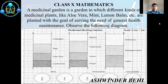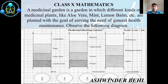Hello friends, today we'll discuss a new case study of Class 10 based on chapter coordinate geometry. A medicinal garden is a garden in which different kinds of medicinal plants like aloe vera, mint, lemon balm, etc. are planted with the goal of serving the need of general health maintenance. Observe the following diagram — on the basis of these conditions we have some questions.